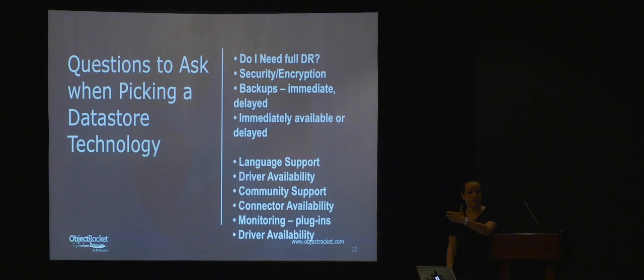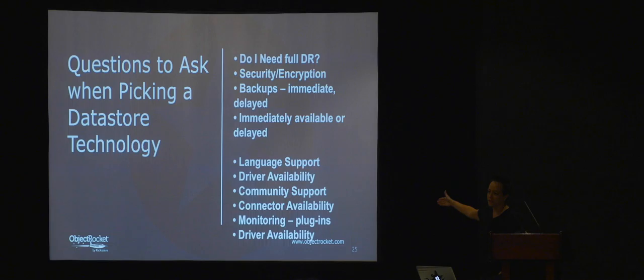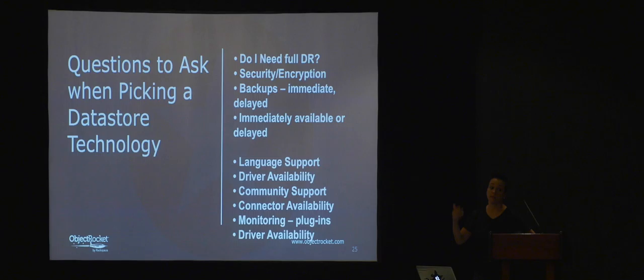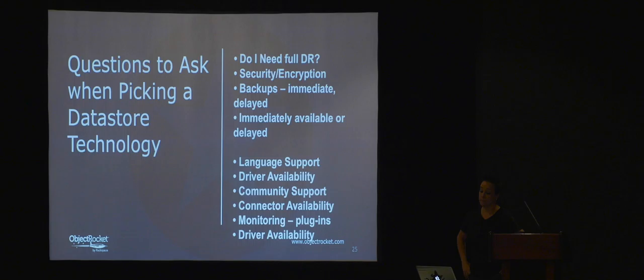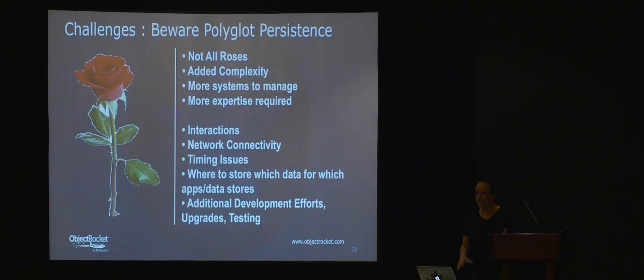Community support is huge — as certain companies decide to shut down access to tools or change APIs, the community will make the difference. Connector availability: ObjectRocket has a connector, Elastic's Mongo connector, Apache and Cloudera have many connectors. Monitoring plugins include Verkona and New Relic plugins, plus MongoDB MMS. Driver availability: MongoDB has tons of drivers — JSON, Python, PyMongo, Mongoose, and many more.